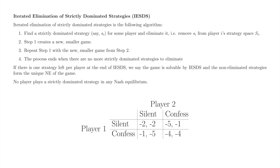Here is our old friend, Prisoner's Dilemma. As we saw earlier in this video, Player 1's Confess strictly dominates Player 1's Silent. Iterated elimination tells us to eliminate the entire row starting with Player 1's Silent from consideration. When we eliminate Silent from Player 1's strategy space, we eliminate the outcomes Silent-Silent and Silent-Confess. I've grayed out the row on this slide, although in doing IESDS on paper it's more common to cross out the row with a single line.